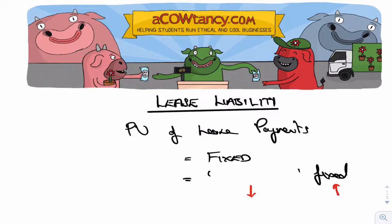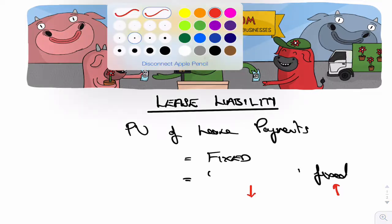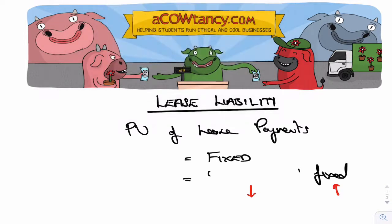We've just had a look at the lease liability and we looked at fixed payments, didn't we? Now I want us to think about in-substance fixed payments. So what does in-substance actually mean? They're fixed in-substance, meaning they are variable payments, but actually they're fixed because they're unavoidable. We're going to have to pay them, and so therefore it's like having a fixed payment. So you include in-substance fixed payments as well.